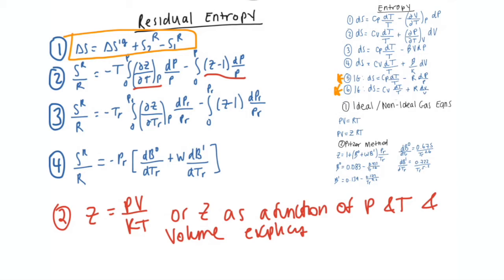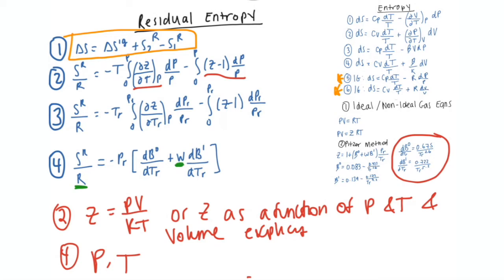For entropy equation number 4, R is your universal gas constant, the differentials are given, and omega comes from your table. You're going to need P reduced — which is P over P critical — so you need a pressure. You also need a temperature to get your differentials using the Pitzer method.